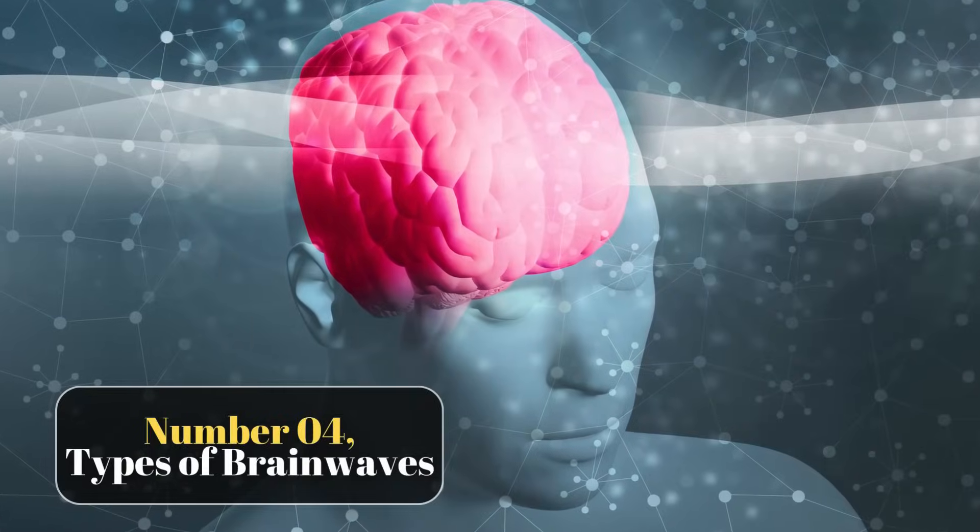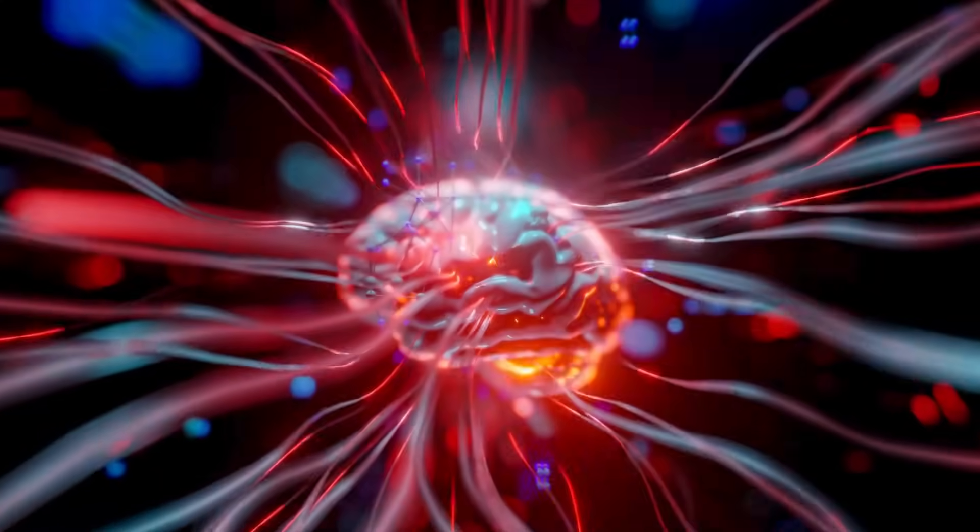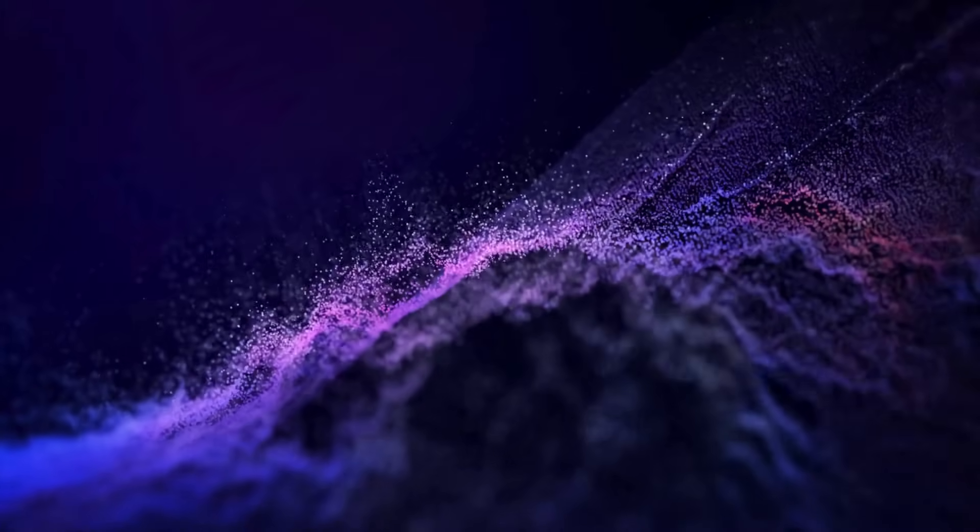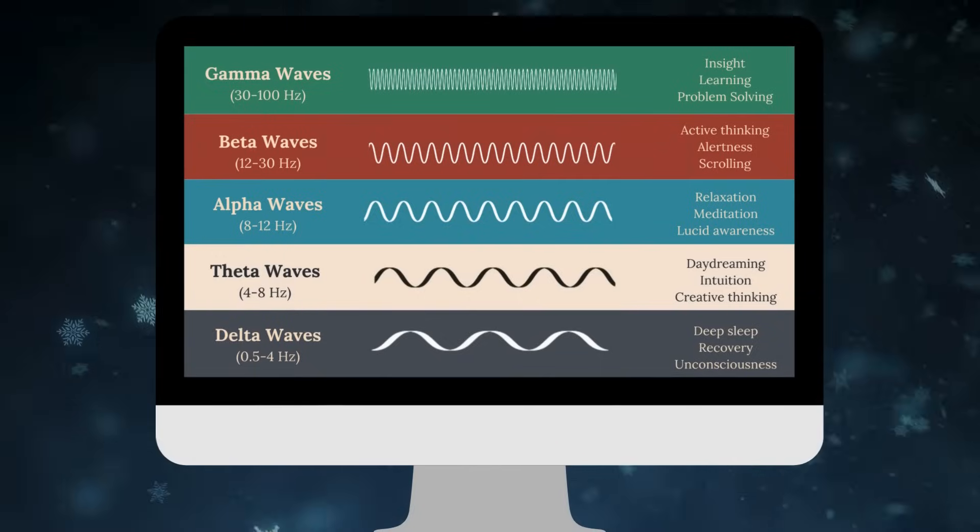Number 4. Types of Brainwaves. Brainwaves are electrical impulses in the brain that occur at different frequencies, and each type of brainwave corresponds to a distinct mental state. The five main types are delta, theta, alpha, beta, and gamma.